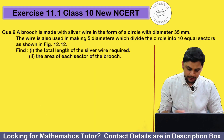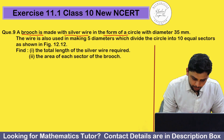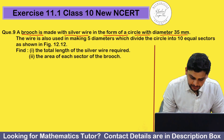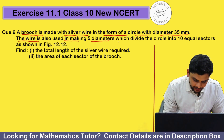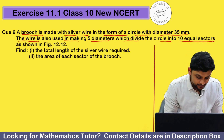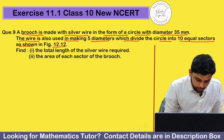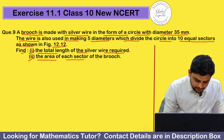So this is the question. A brooch is made with silver wire in the form of a circle with diameter 35 mm. The wire is also used in making 5 diameters which divide the circle into 10 equal sectors, as shown in figure 12.12. Find: number 1, the total length of the silver wire required; number 2, the area of each sector of the brush.